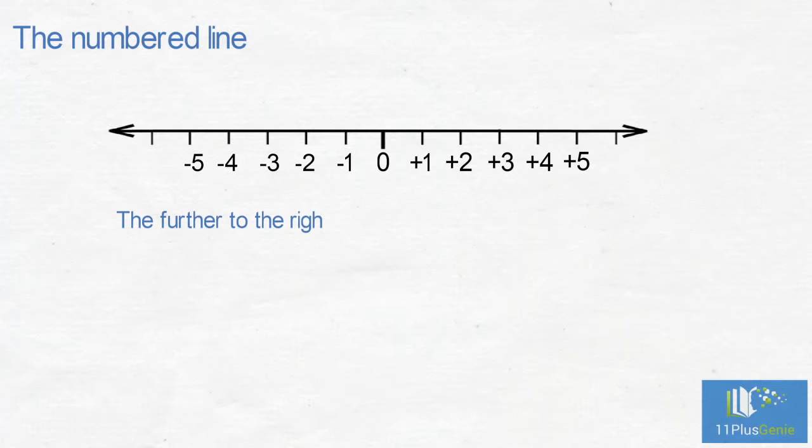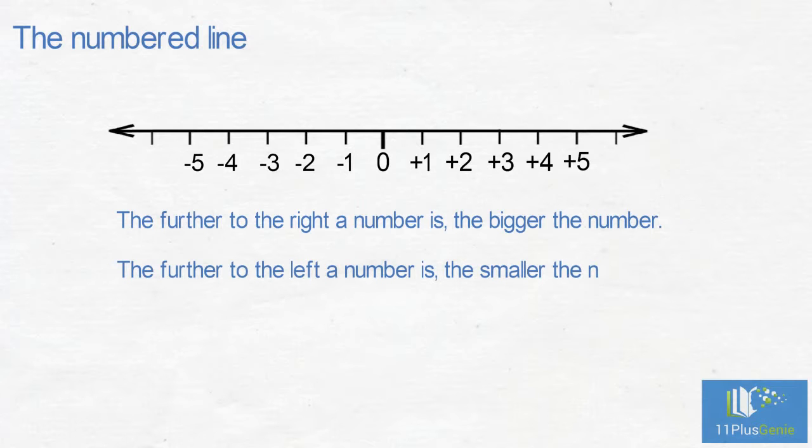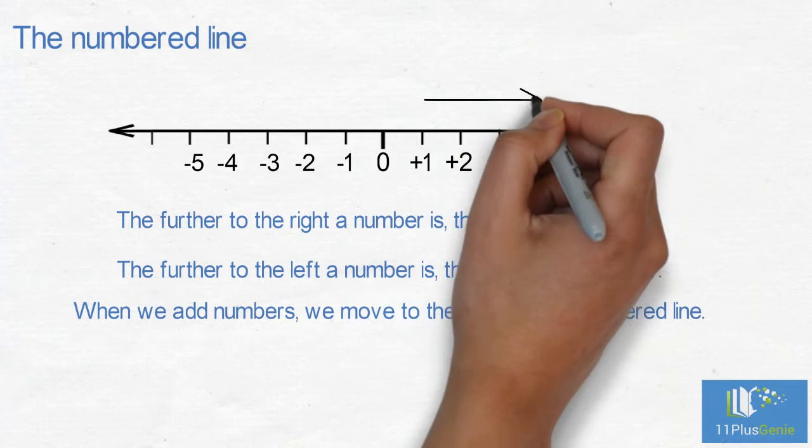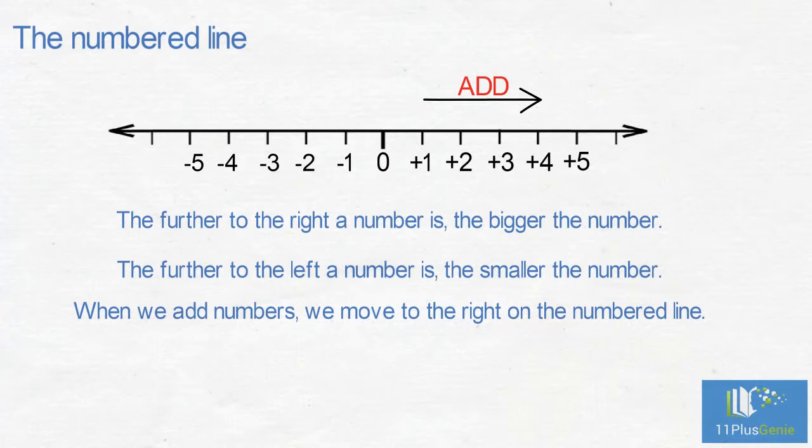The further to the right a number is, the bigger the number is. The further to the left a number is, the smaller the number is. When we add numbers, we move to the right on the numbered line. If we subtract numbers, we move to the left on the numbered line.